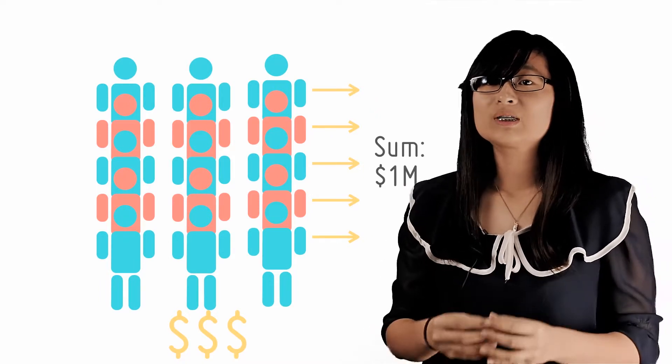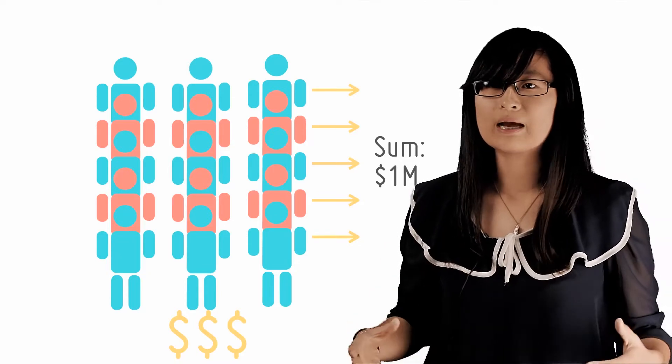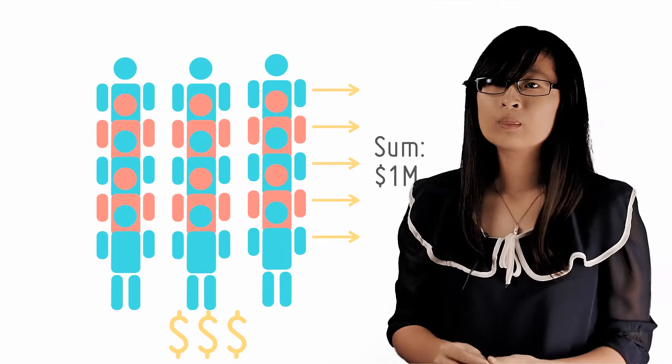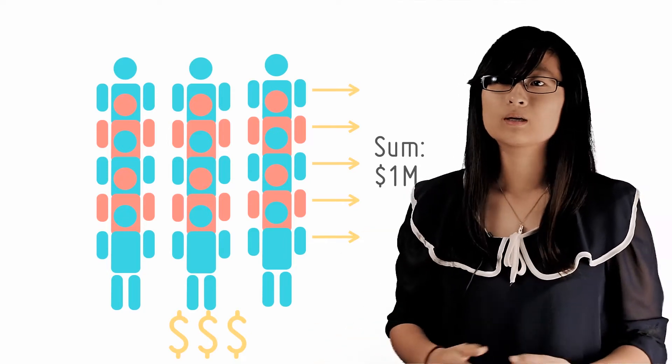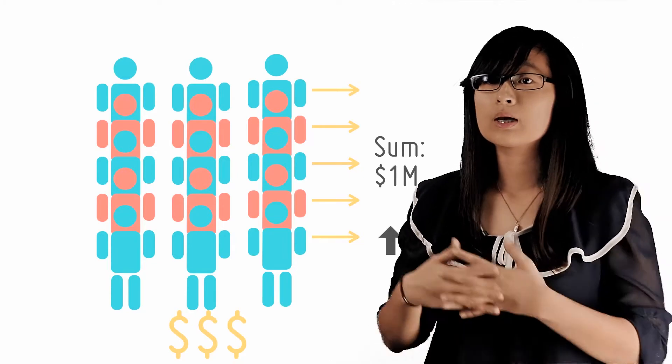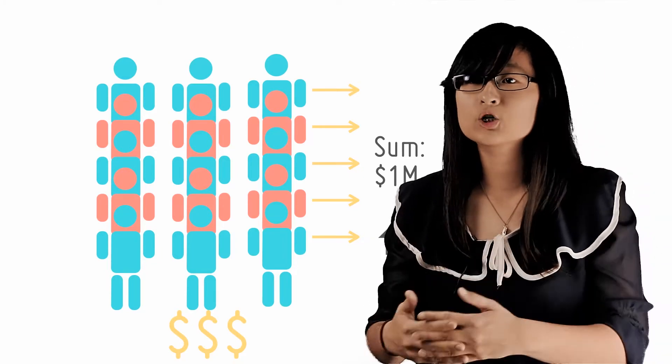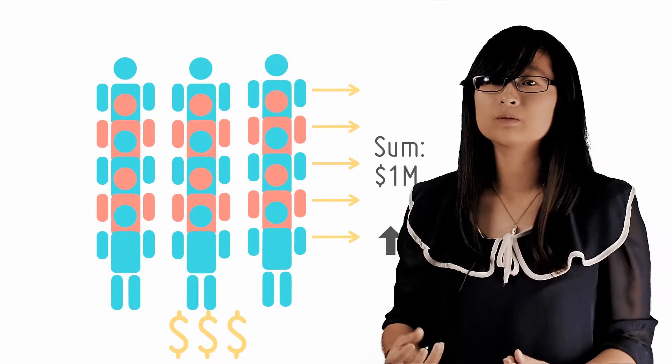So the increase in national income or output at the end of this whole process is the sum of the increases in the net income of everybody affected. So since one person's spending becomes another person's income, the increase in the national income is much greater than the initial one million dollar injection and is in fact a multiple of it.